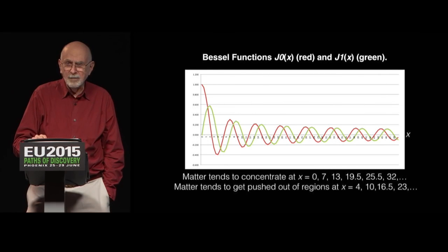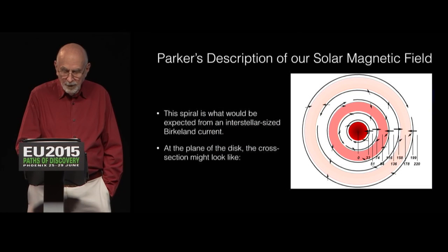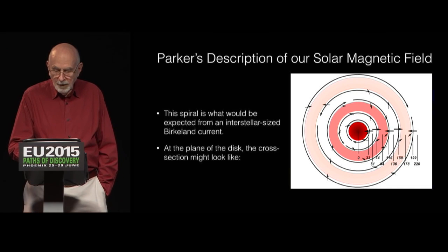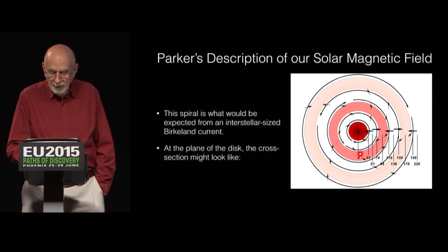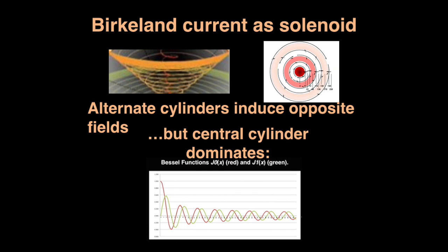However, in Don Scott's talk, he showed us this first-order Bessel function, which gives us the strength of the current in each of the cylinders. And it's clear from that diagram that the central cylinder dominates. It's considerably more powerful than any of the other cylinders. And so to some extent, the other cylinders cancel one another out, and it's really the central cylinder to a first approximation that is going to act as a solenoid on the sun.